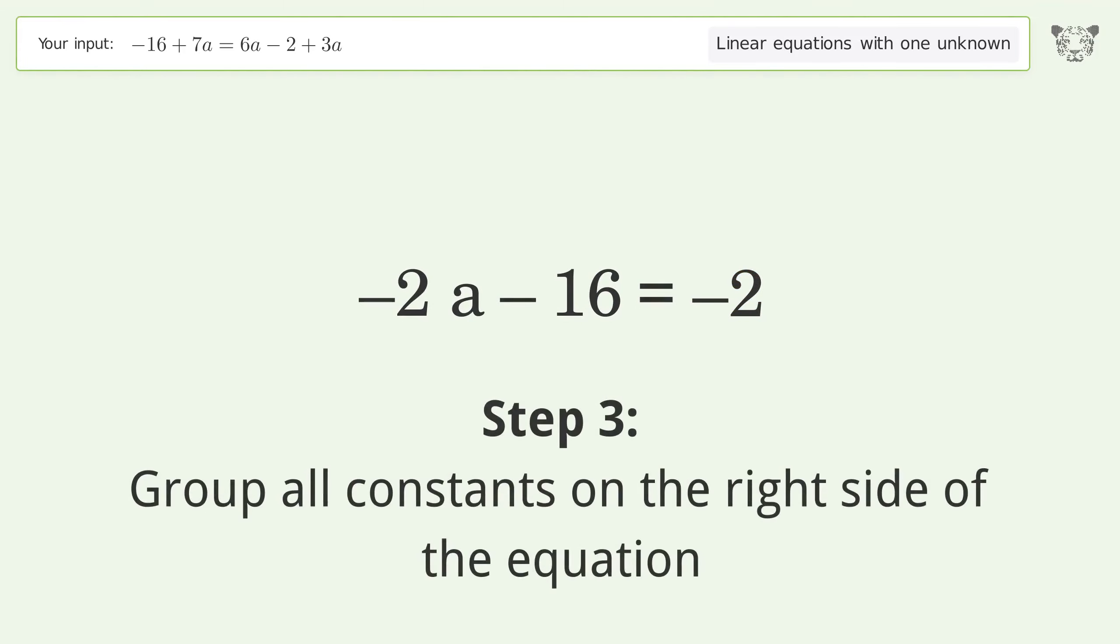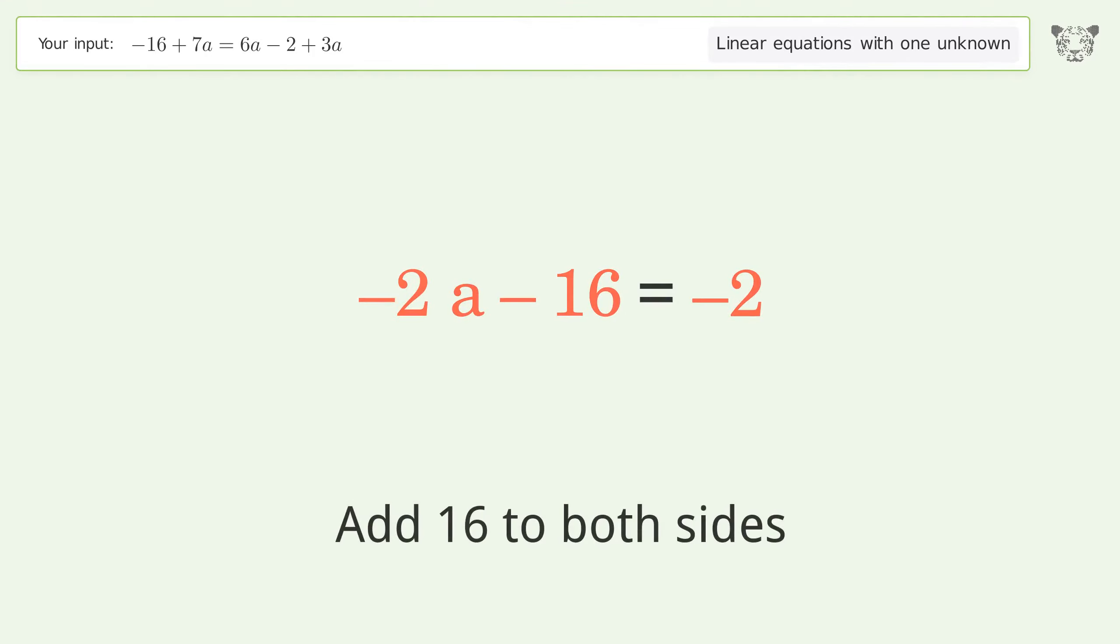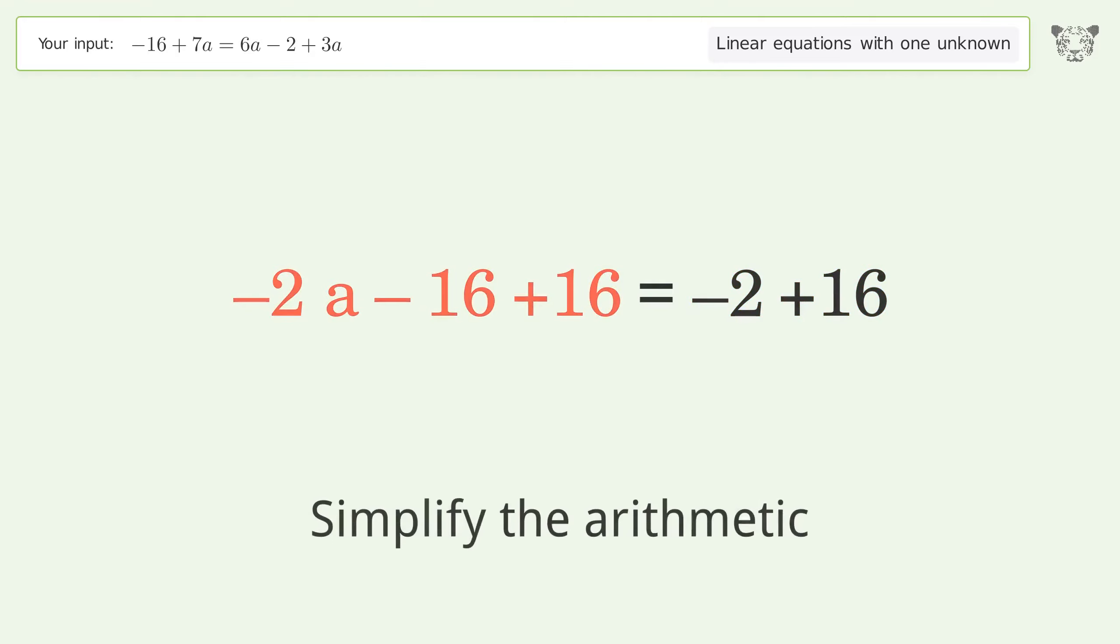Group all constants on the right side of the equation. Add 16 to both sides. Simplify the arithmetic.